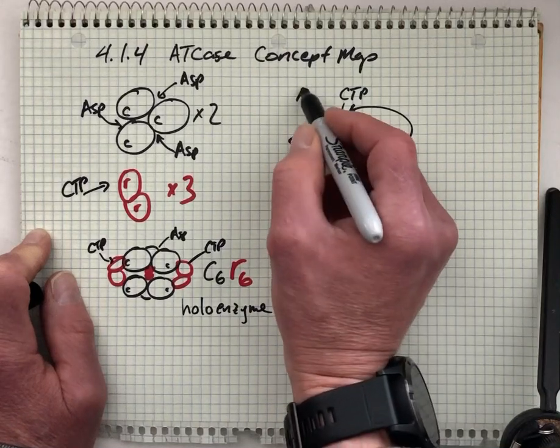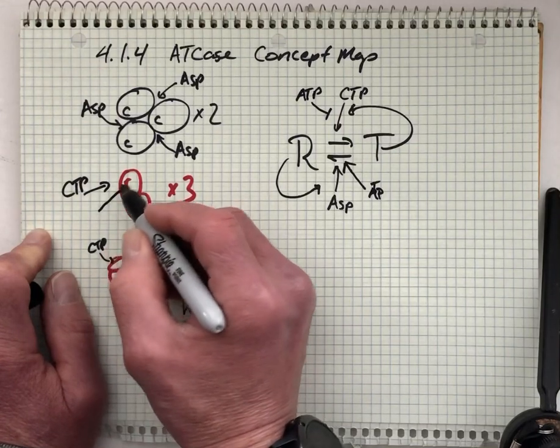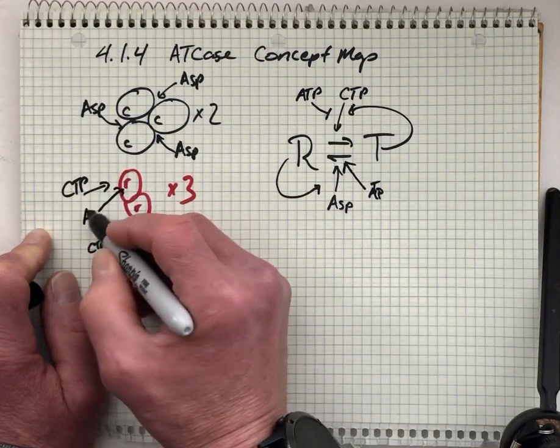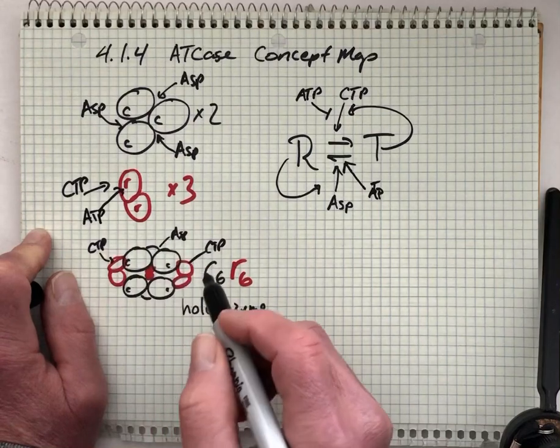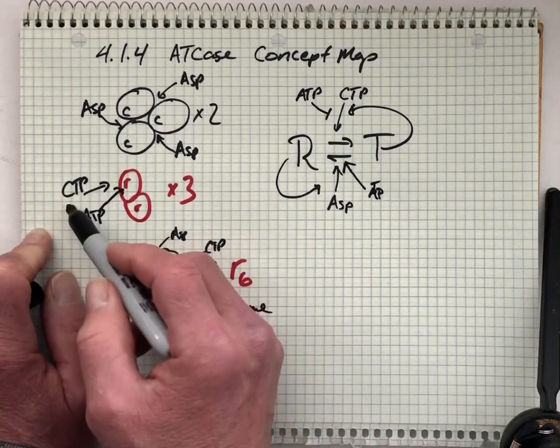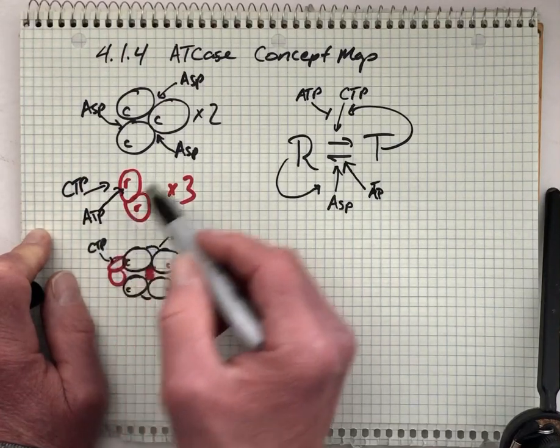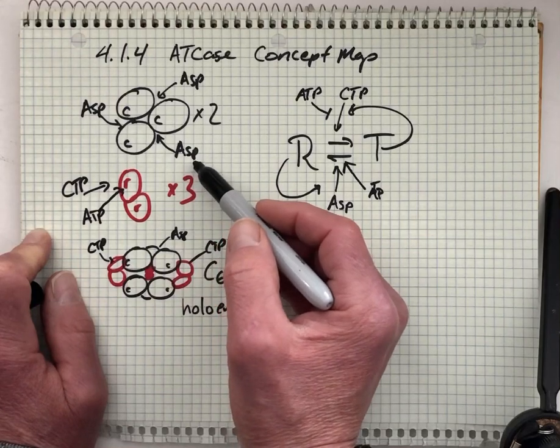So ATP, once it's there in the regulatory subunit, it blocks, if it gets there first, it blocks the binding of the CTP units. So you can overcome allosteric negative regulation, this feedback inhibition by CTP, by having ample ATP and by having a lot of substrate.